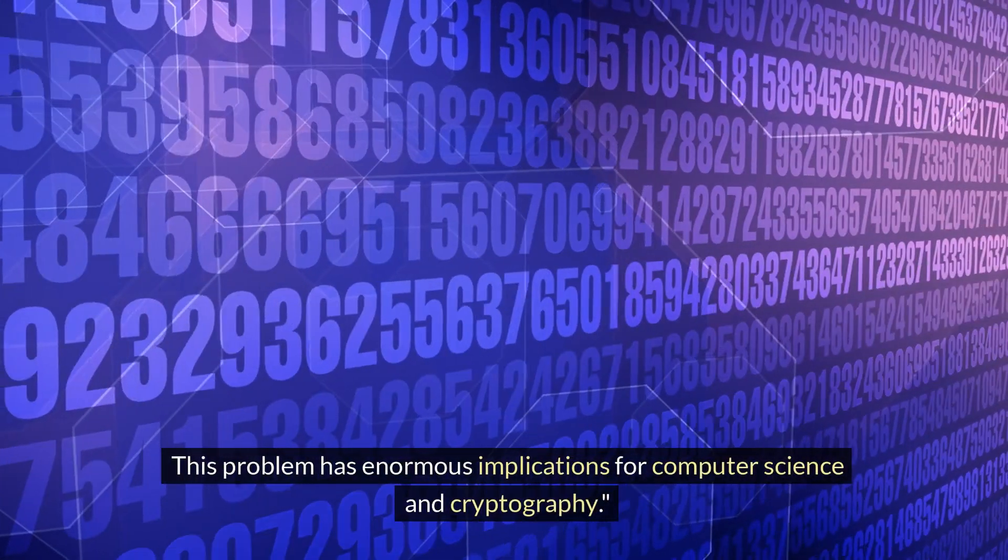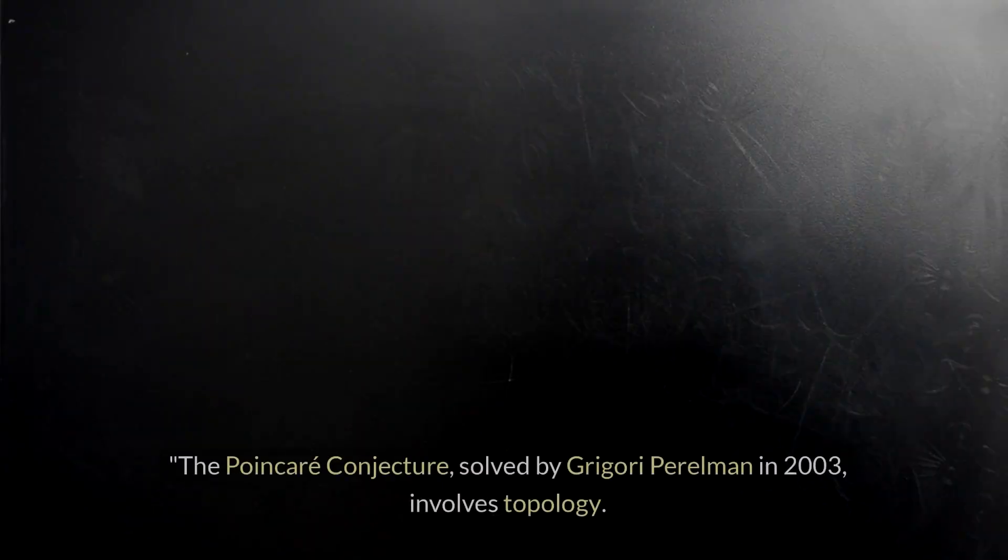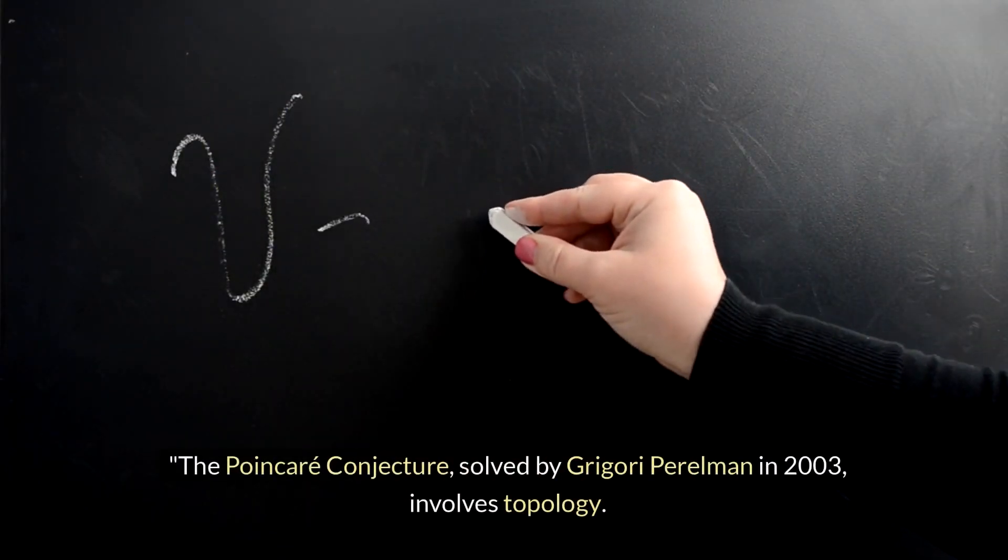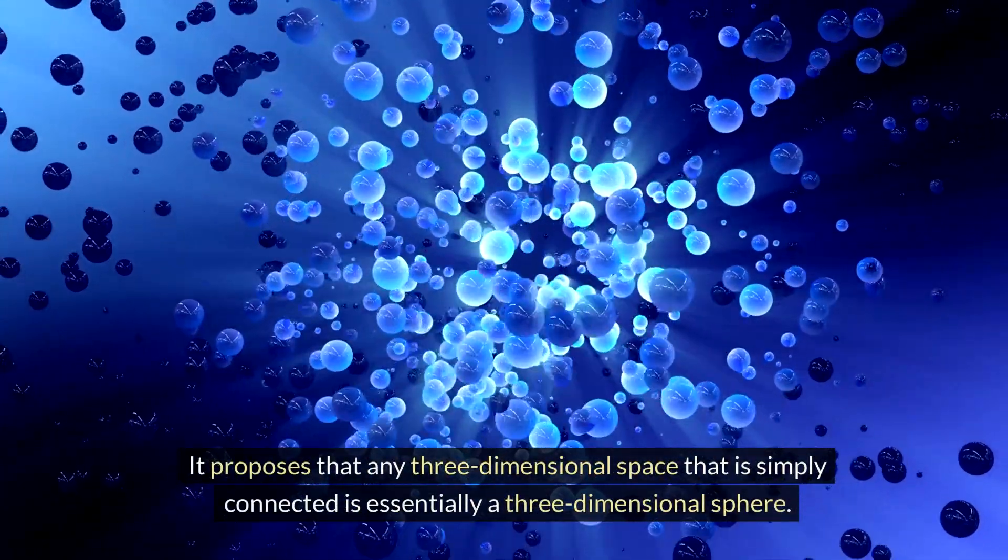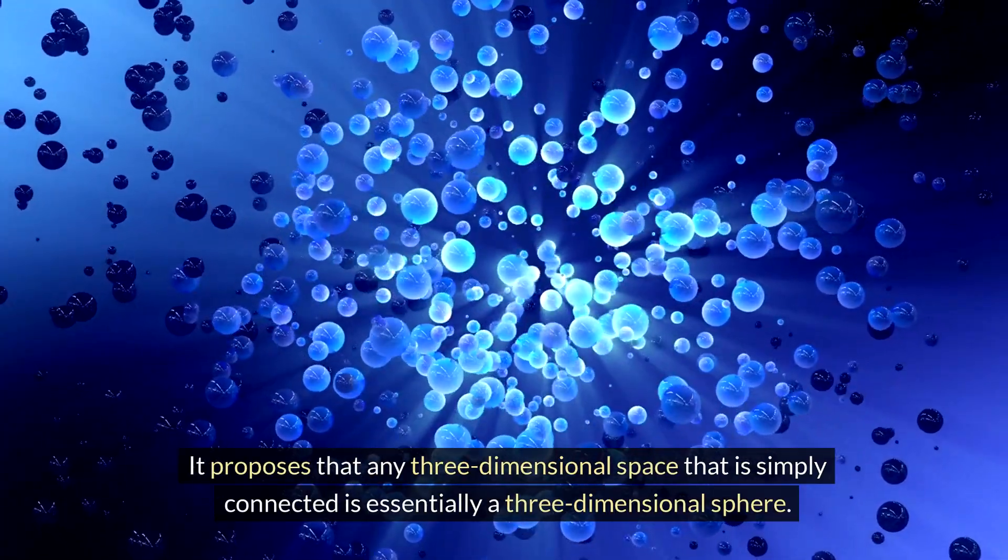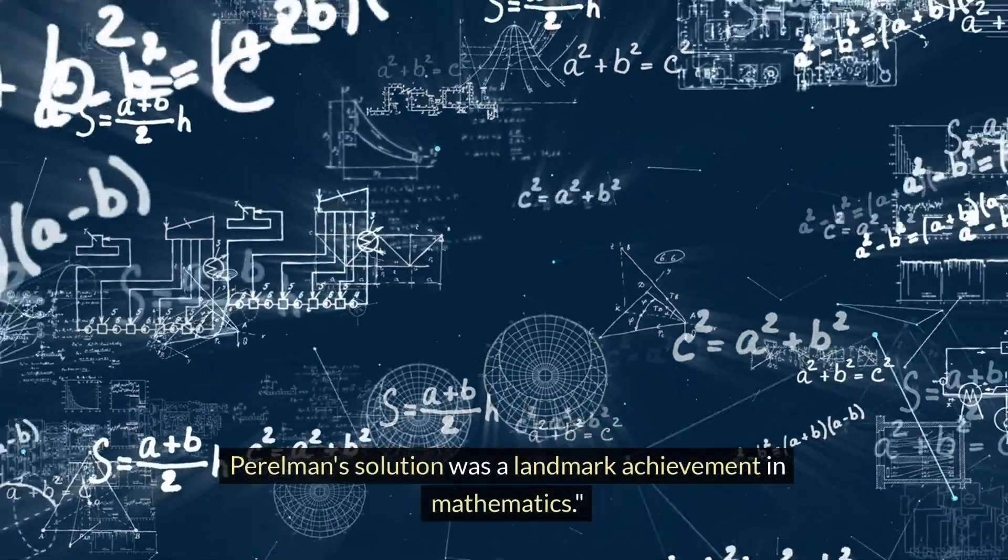The Poincaré Conjecture, solved by Gregory Perelman in 2003, involves topology. It proposes that any three-dimensional space that is simply connected is essentially a three-dimensional sphere. Perelman's solution was a landmark achievement in mathematics.